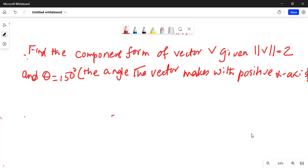It says find the component form of vector v given the magnitude of vector v is equal to 2 and theta is equal to 150 degree. The angle the vector makes with the positive x axis. So let's get started on this.